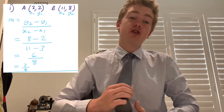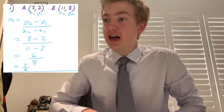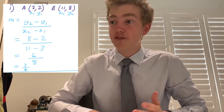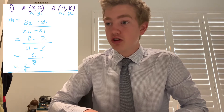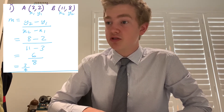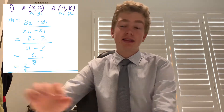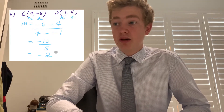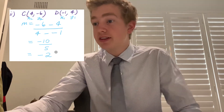Let's go through some gradient examples. Point A is (3, 2) and point B is (11, 8). So m = (8 − 2) / (11 − 3) = 6/8 = 3/4. That's your gradient. Another example: point C is (4, −6) and point D is (1, 4). So m = (−6 − 4) / (4 − (−1)) = −10/5 = −2. That's your gradient. That's all you need to know for gradient.